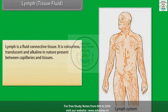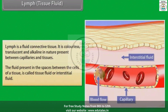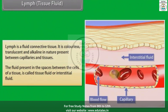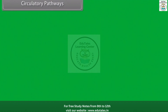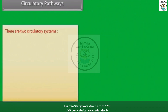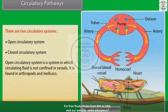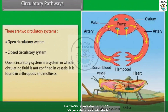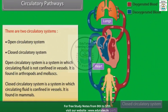Lymph is a fluid connective tissue. It is colorless, translucent, and alkaline in nature, present between capillaries and tissues. The fluid present in the spaces between the cells of a tissue is called tissue fluid or interstitial fluid. There are two circulatory systems: open circulatory system, in which circulating fluid is not confined in vessels (found in arthropods and mollusks), and closed circulatory system, in which circulating fluid is confined in vessels (found in mammals).